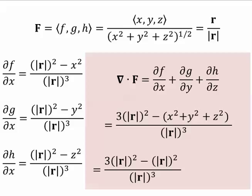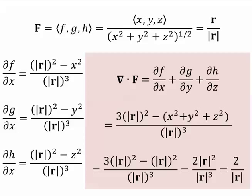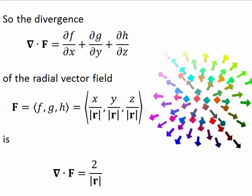Now I use the fact that x squared plus y squared plus z squared is the magnitude of r squared. And then I just have 3r squared minus r squared, which is 2r squared. And then, look, I've got r squared over r to the 3, and so I'm left with 2 over r. So the divergence of this radial vector field is just 2 over the magnitude of r.